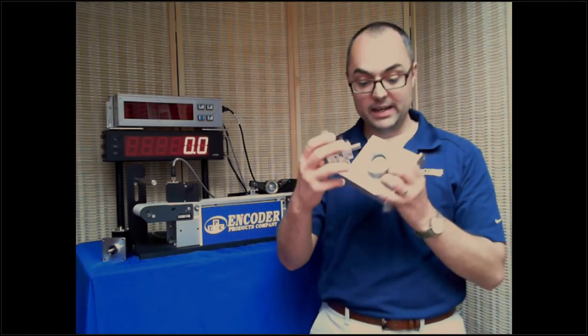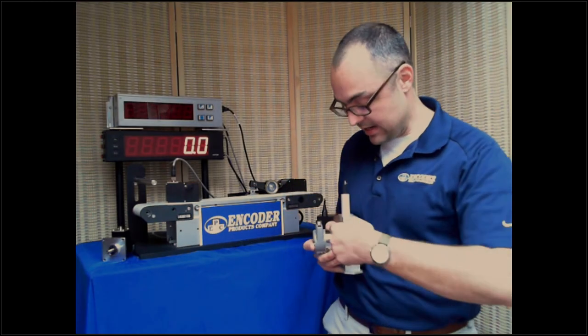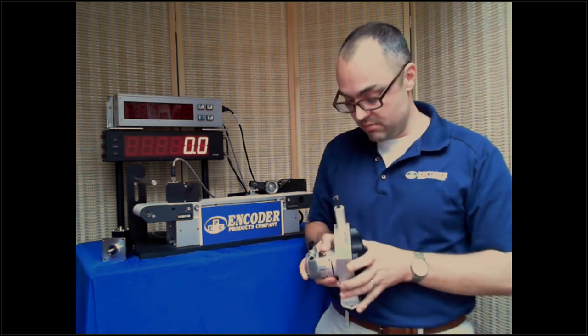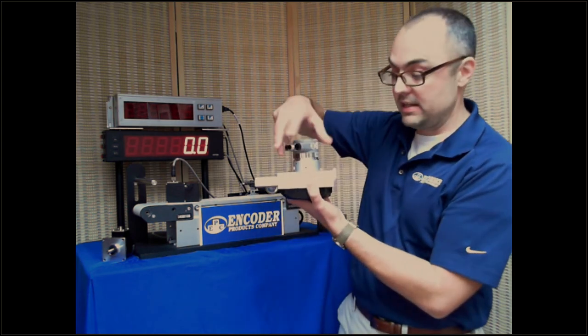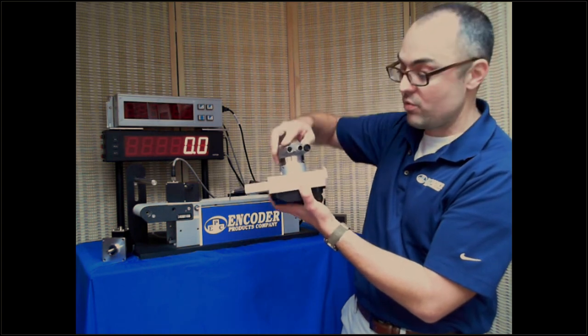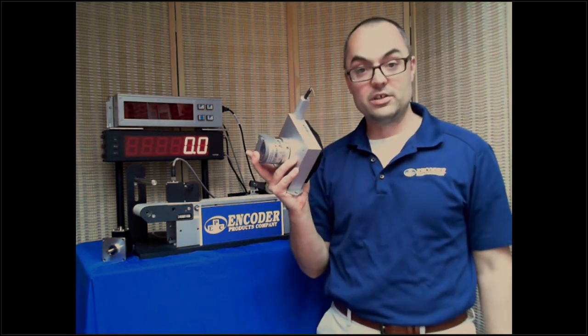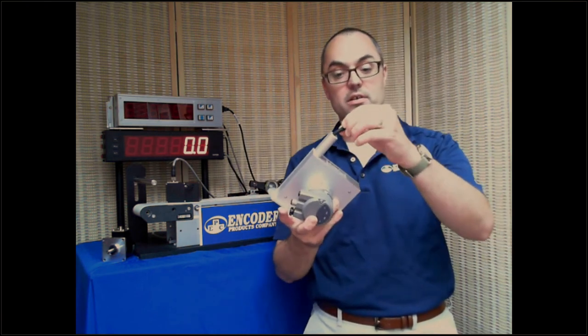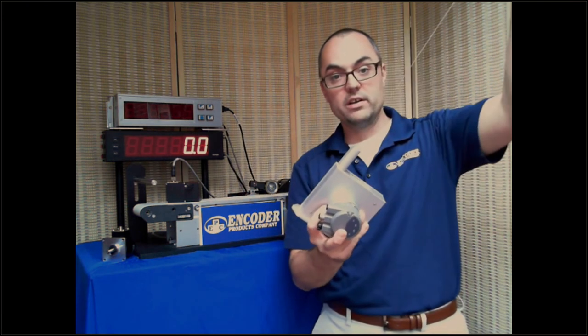And simply take this, it slides in, you take an Allen key, you tighten it on the hub, you take an Allen key, you tighten it on the shaft, making sure to orient the cable exits however you want. And that's it. Installation is easy peasy. Bolt it down, hook this up to whatever's moving, and you're good to go.